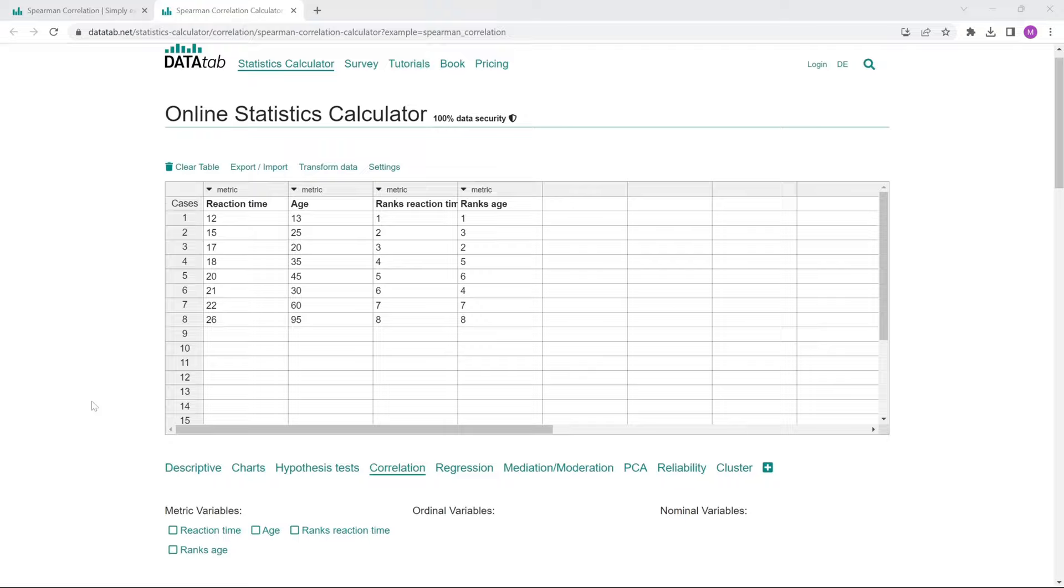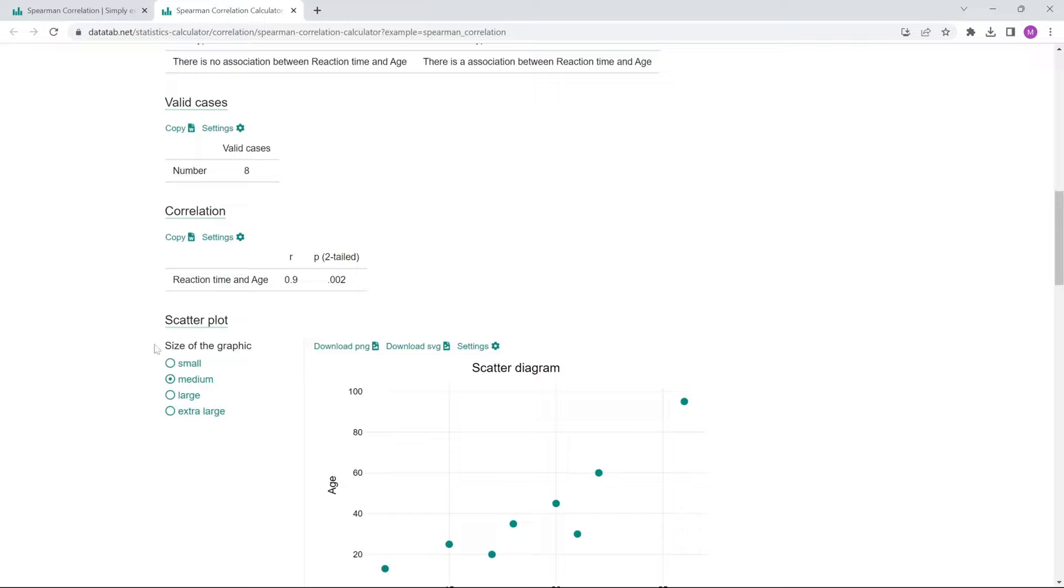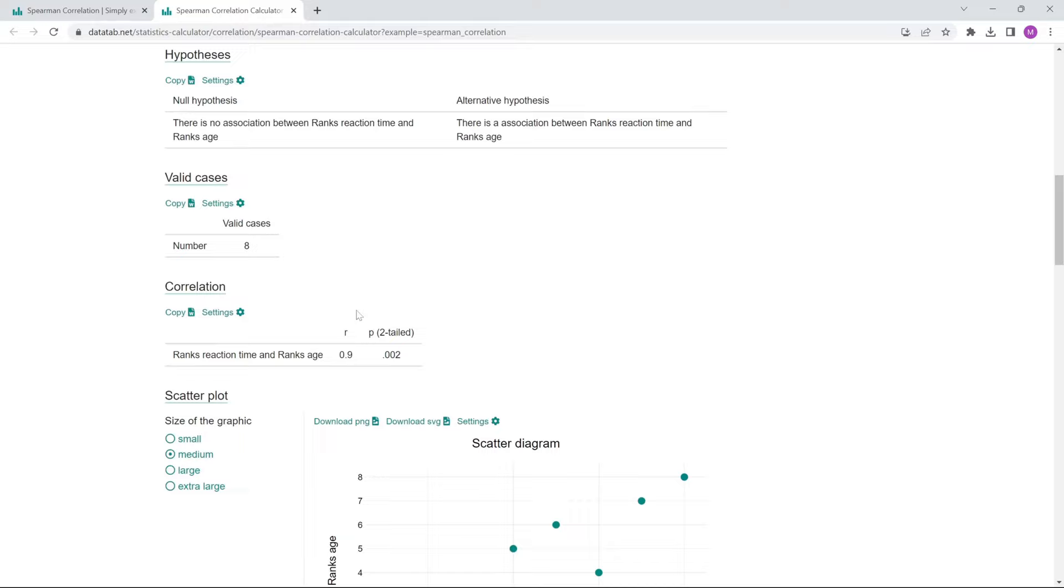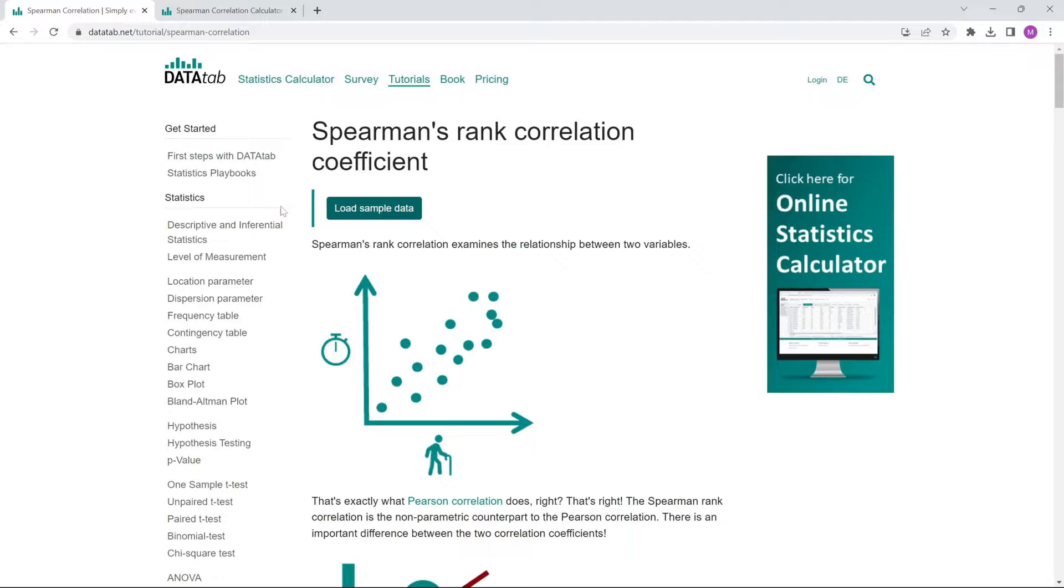Now we can either calculate the Spearman correlation or we can calculate the Pearson correlation from the ranks. There we also get 0.9, so exactly the same as before.